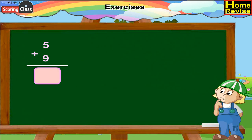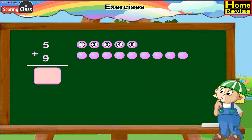5 plus 9. If we add 9 to 5, it will be 6, 7, 8, 9, 10, 11, 12, 13, 14. So 5 plus 9 is equal to 14.